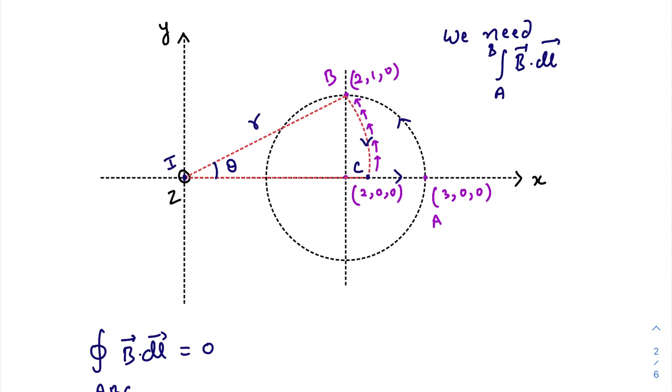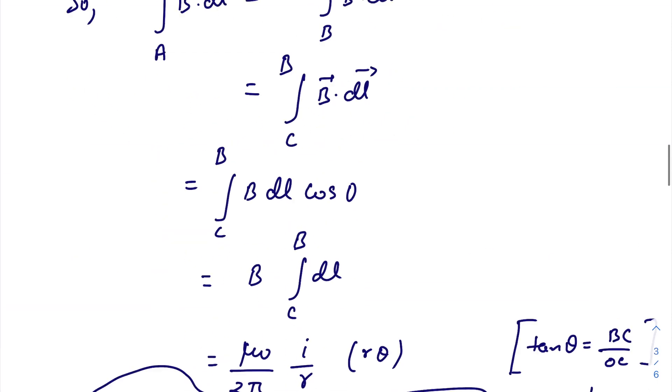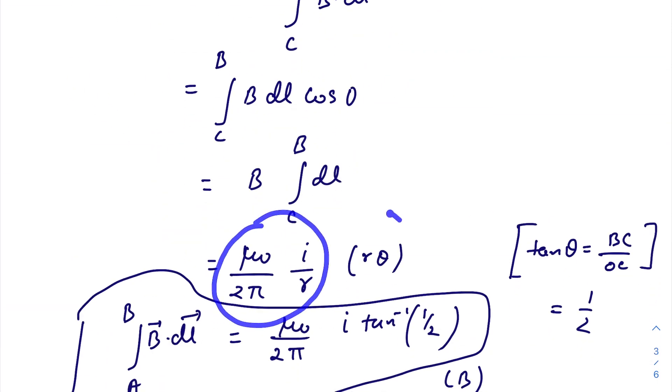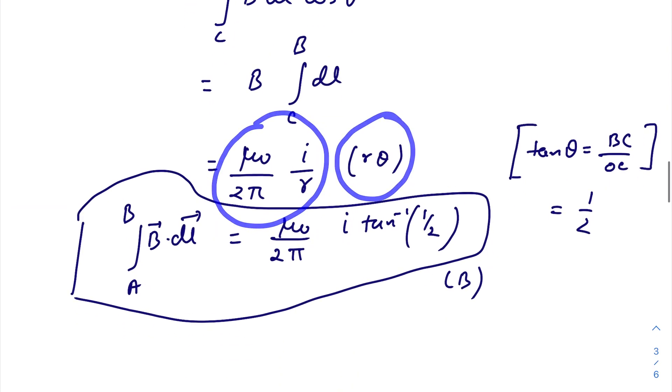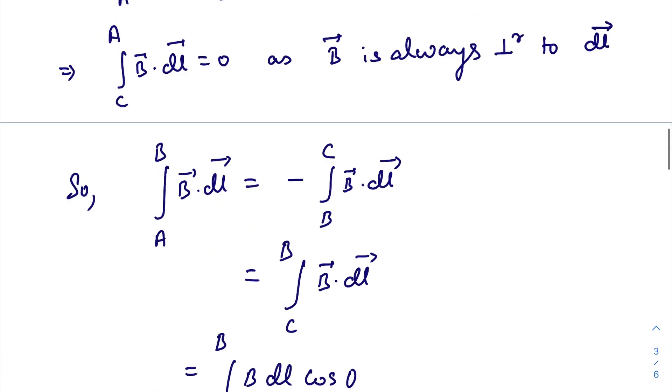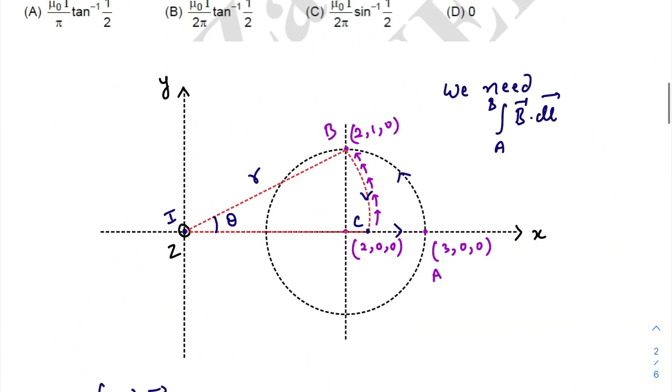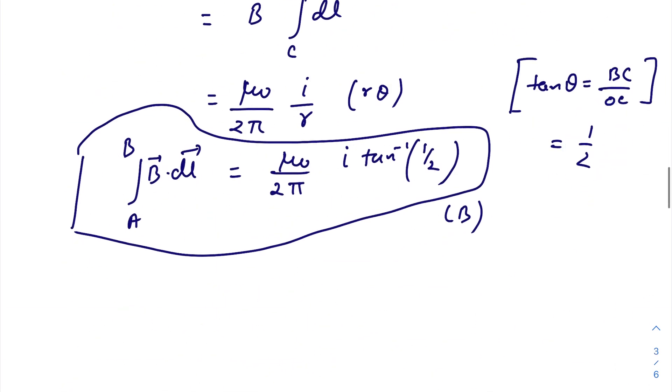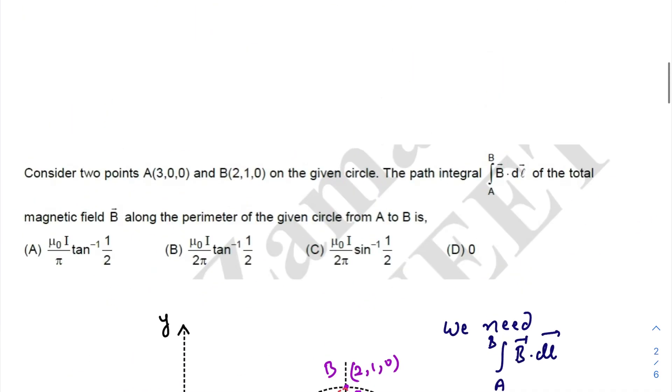B is the magnetic field at every point on this arc, which is μ₀/2π times i/r. The length of the arc is r theta, so r cancels out. We have tan(θ) = BC/OC = 1/2. Put the value θ = tan⁻¹(1/2), so μ₀i/2π tan⁻¹(1/2) is our final answer, option B.